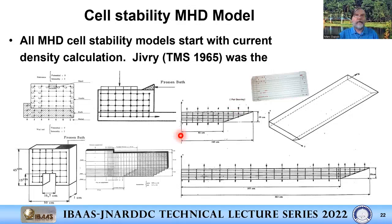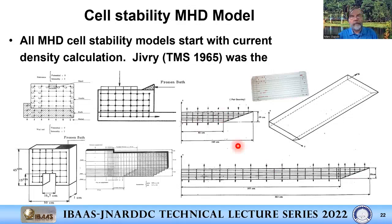The early work involved old punch-card technology, solving a 2D electrical network — around the anode bath, the cathode block in the other direction, and the metal pad. Eventually you go to full 3D and get the current density in the metal pad, but to get the metal pattern you need to solve the current density in the full cell and in the bus bar around. If you read that paper it is quite advanced for its time.